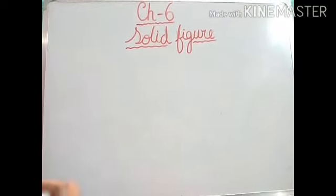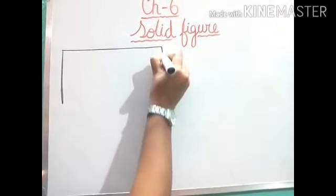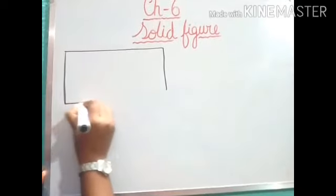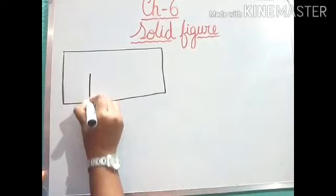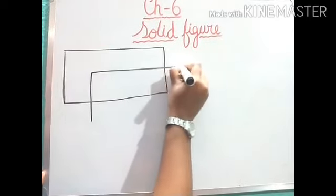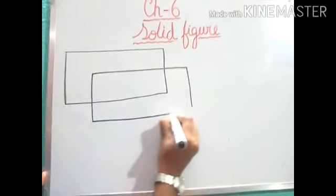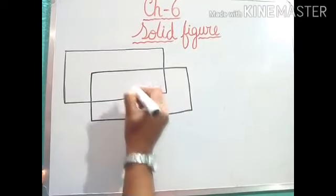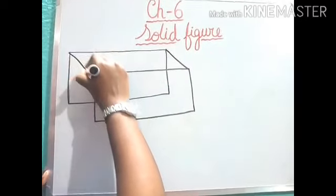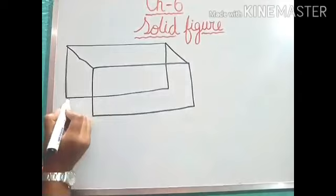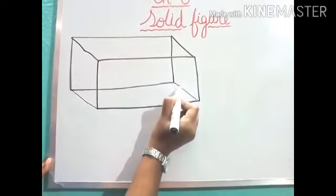So, first you will draw. Then another rectangle from the middle. And join all the corners. This corner to this corner, this corner to this corner, this corner to this one and this corner to this corner.